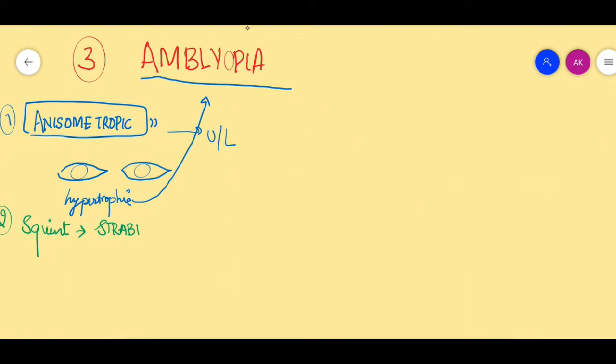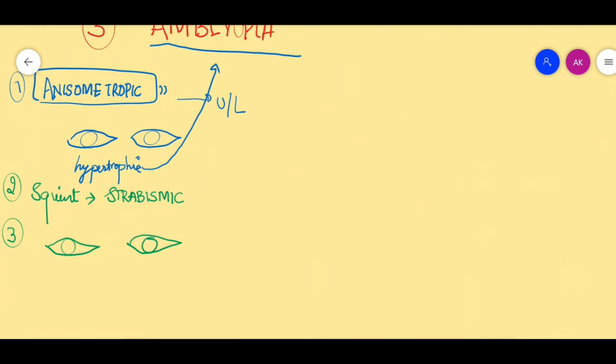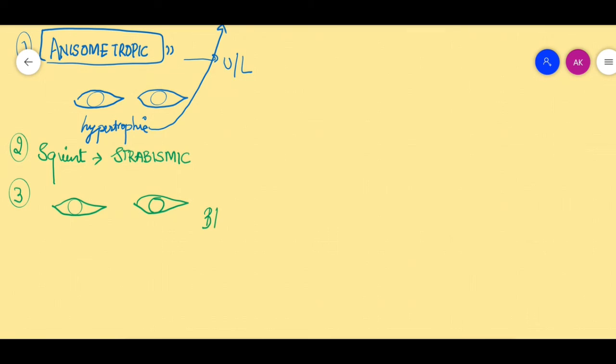What about hypermetropia if it is present in both eyes? Yes, then also they can get amblyopia. If bilateral high hypermetropia is present, then they can develop amblyopia in both eyes. Such amblyopia is called ametropic amblyopia. These are three possibilities of amblyopia that uncorrected hypermetropes can develop.